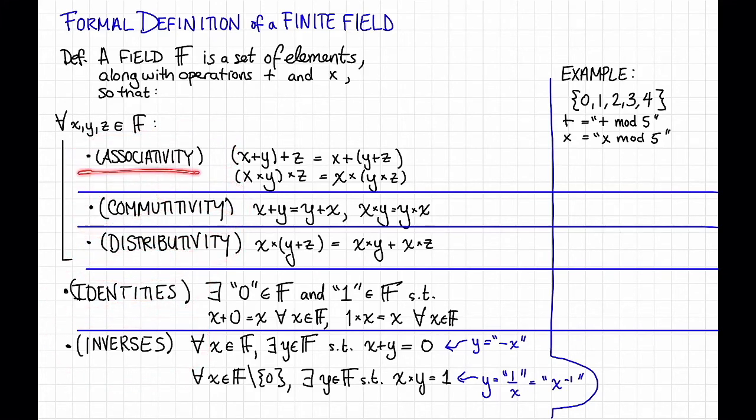The first one, associativity, this holds since plus and times are both associative to begin with, and they're still associative mod 5. Similarly, commutativity holds, and the distributive law holds. If you want to be careful, you can go and check that these hold for addition and multiplication mod 5. That would probably build some character.